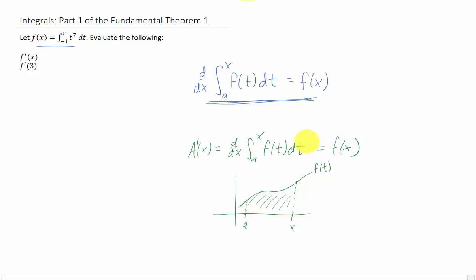Okay, I hope that helps you a little bit, but I want to focus on the problem here. If f of x is the integral from negative 1 to x of t to the 7th, what is f prime of x?